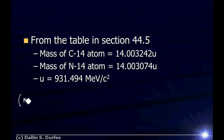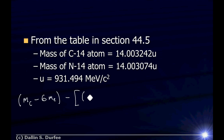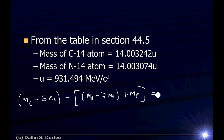I want to take the mass I started with, which is the mass of a carbon-14 atom minus six electron masses, because carbon has six electrons, to get just the mass of the nucleus. Then I subtract the mass I ended up with: the mass of a nitrogen-14 atom minus seven electron masses for the nucleus, plus the extra electron that was emitted. Notice: I've got negative six here, and on the other side negative seven plus one is negative six. So the electrons cancel, and I'm left with just the masses of the atoms.